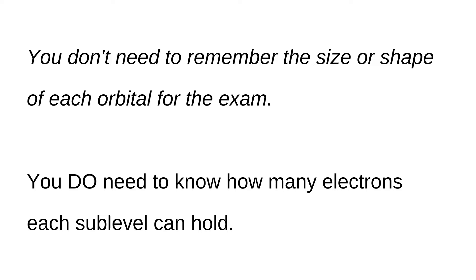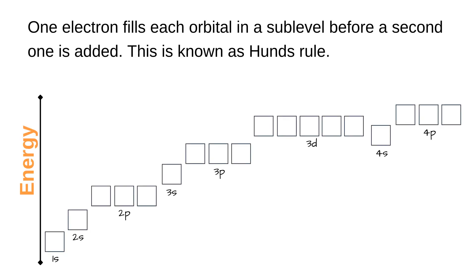You do need to know how many orbitals there are in each sublevel and that each orbital holds a maximum of two electrons. When electrons fill the orbitals they fill the lowest energy orbitals first before filling the orbitals of a higher energy. So the 1s would be filled before the 2s, and the 2s would be filled before the 2p.